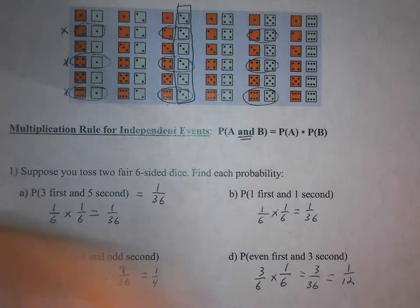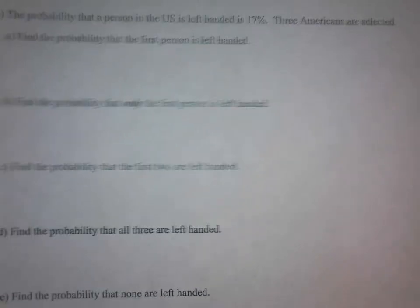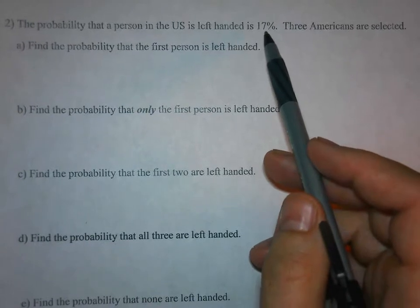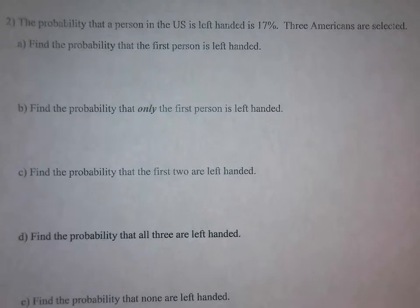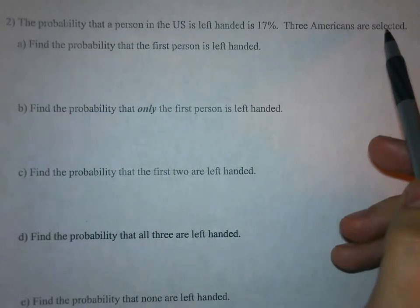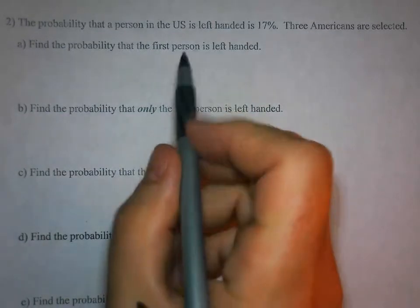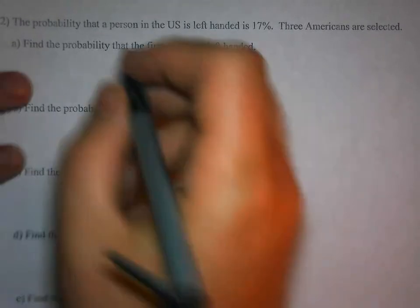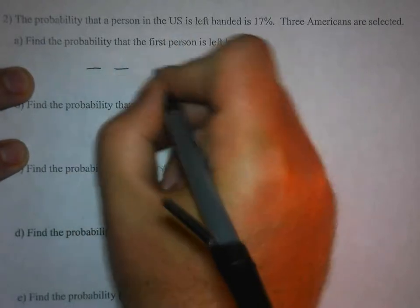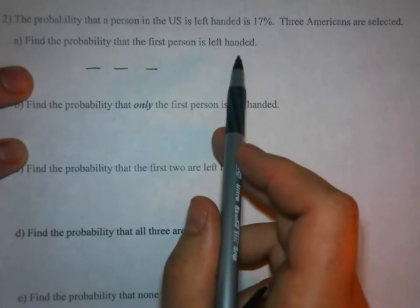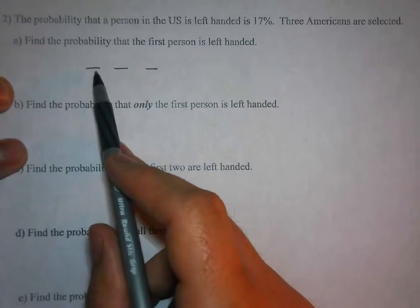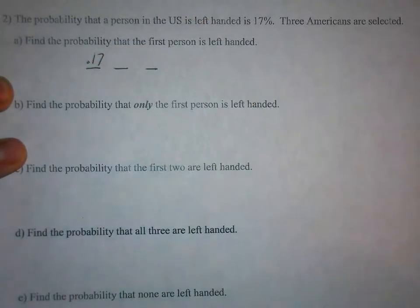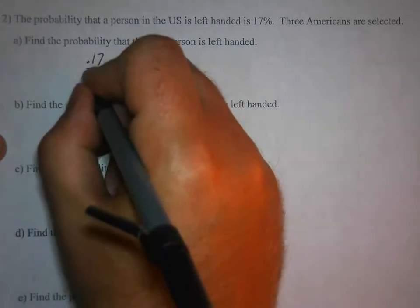On the next example: the probability that a person in the U.S. is left-handed is about 17 percent, or 0.17. Three Americans are selected. Find the probability that the first person is left-handed. You're choosing three people — first person, second person, third person. If the first person is left-handed, the probability is 0.17. The question said nothing about the second two people, so no matter what, those last two people could have been left-handed or right-handed — you have a 100 percent chance of choosing them.